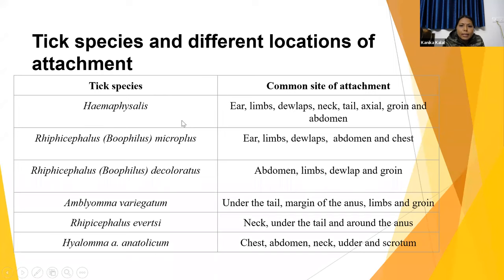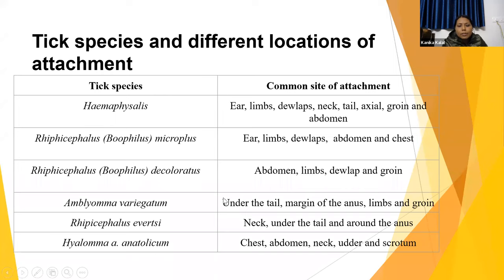Tick species can sometimes be identified according to their location of attachment on the host. Haemaphysalis concentrate mainly in the ear, limbs, dewlaps, neck, tail, axilla, groin, and abdomen. Rhipicephalus microplus, previously known as Boophilus microplus, is commonly seen in the ear, limbs, dewlaps, abdomen, and chest. Rhipicephalus decoloratus is located in the abdomen, limbs, dewlaps, and groin. Amblyomma variegatum attaches under the tail, margin of the anus, limbs, and groin. Rhipicephalus appendiculatus attaches to the neck, under the tail, and around the anus. Hyalomma anatolicum anatolicum attaches to the chest, abdomen, neck, udder, and scrotum. By seeing the ticks and their location, we can identify the species.